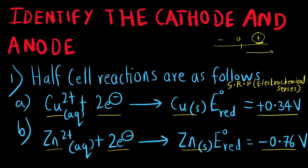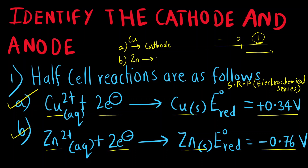We know that the positive value is the higher value. So, which will act as a cathode? The first reaction — it is +0.34 V, which is higher. So, reaction A (copper electrode) will act as a cathode, and reaction B (zinc electrode) will act as the anode.